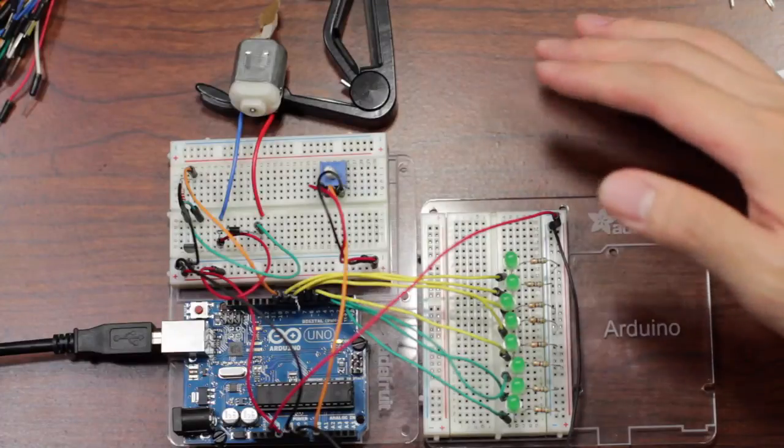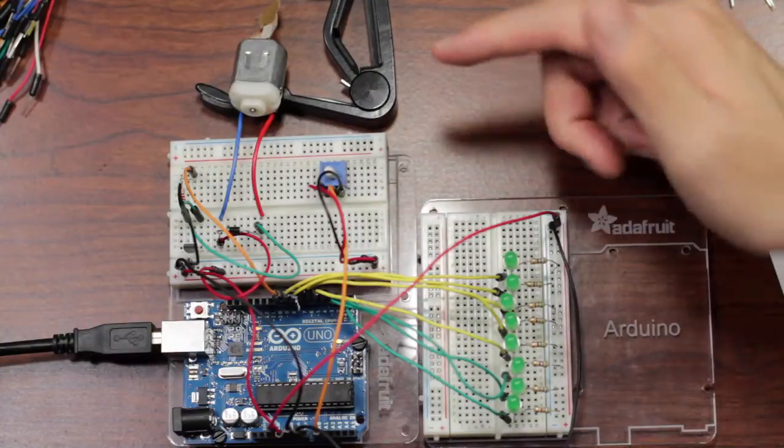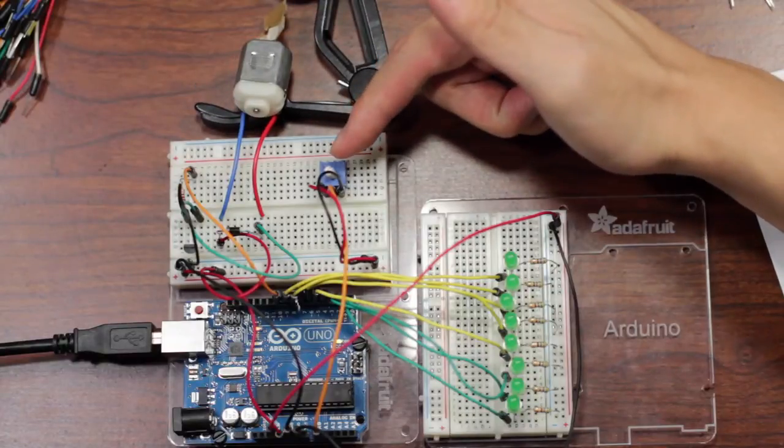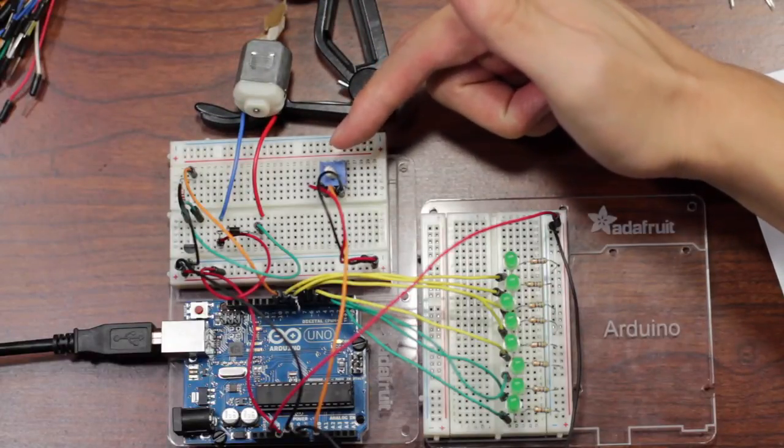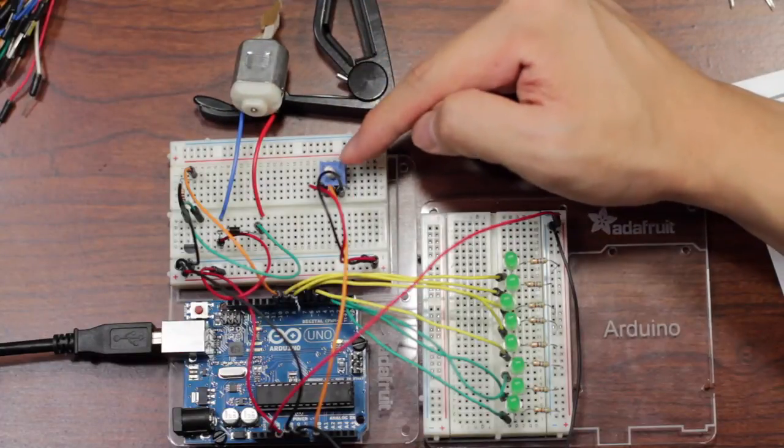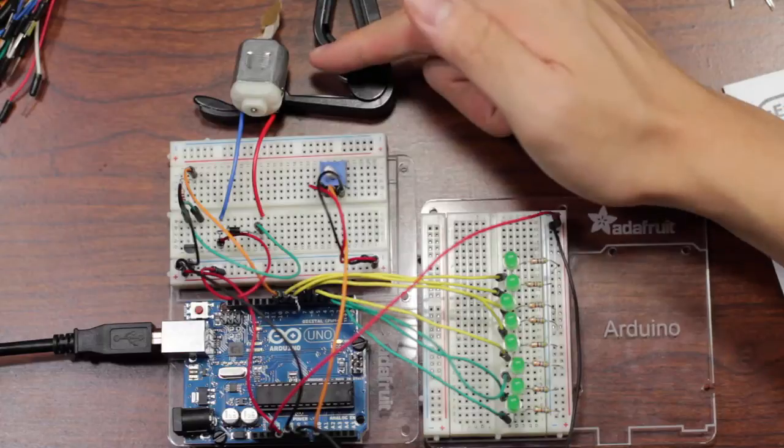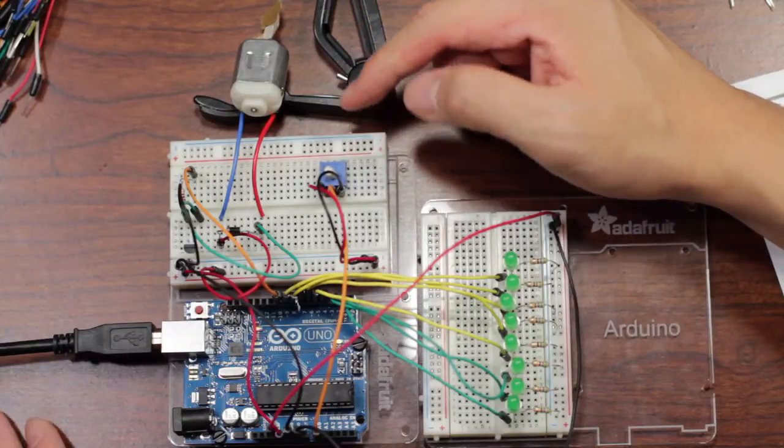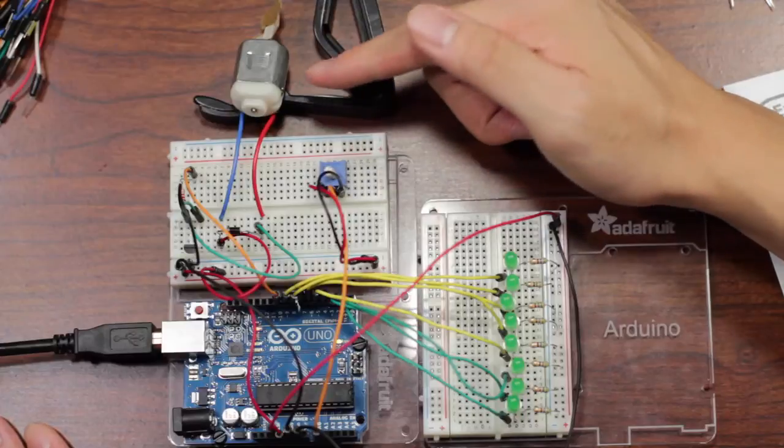So what I wanted to do with this build was to have the motor here and have that run at any speed that I wanted to given by the potentiometer. So basically, the farther I would turn this knob, the faster it would spin, and the further left that I would turn this knob, the slower it would be.